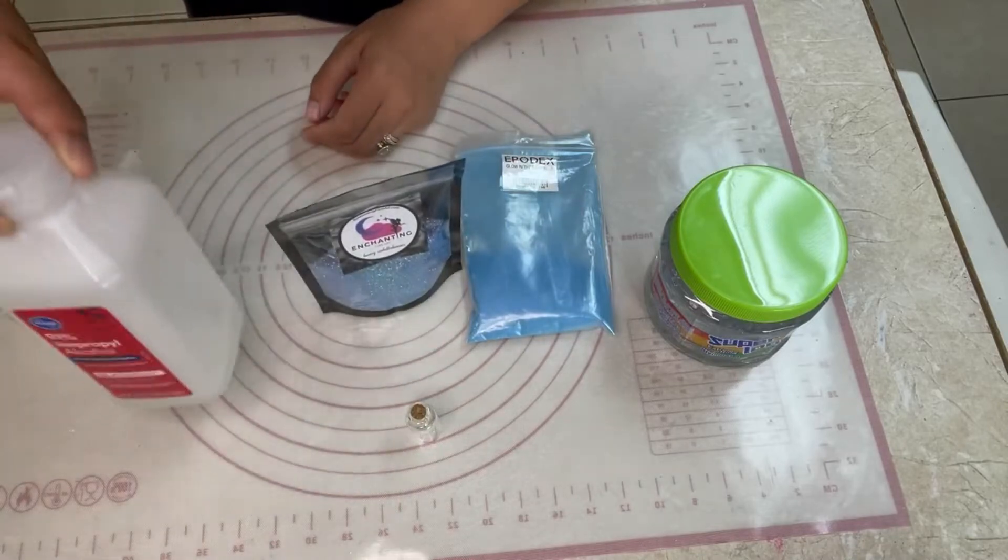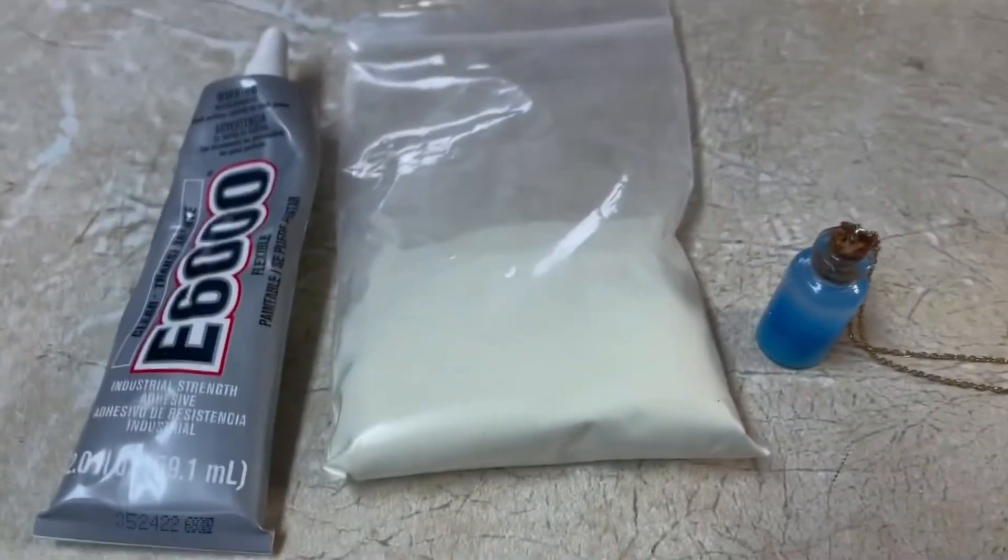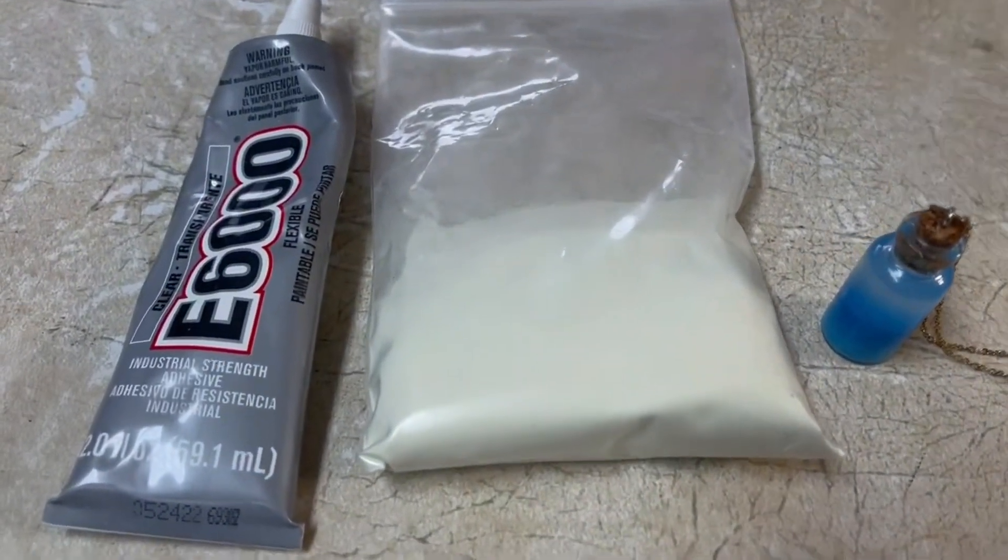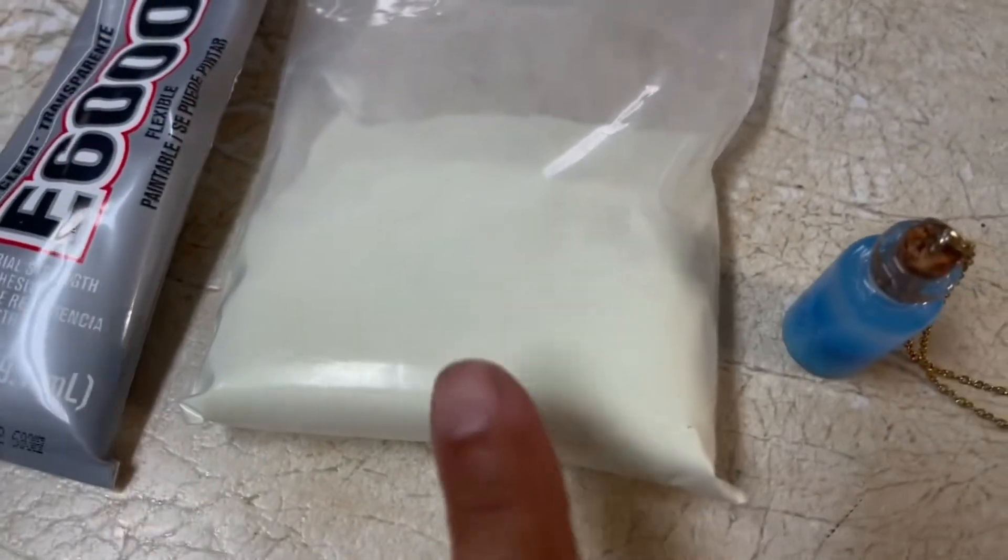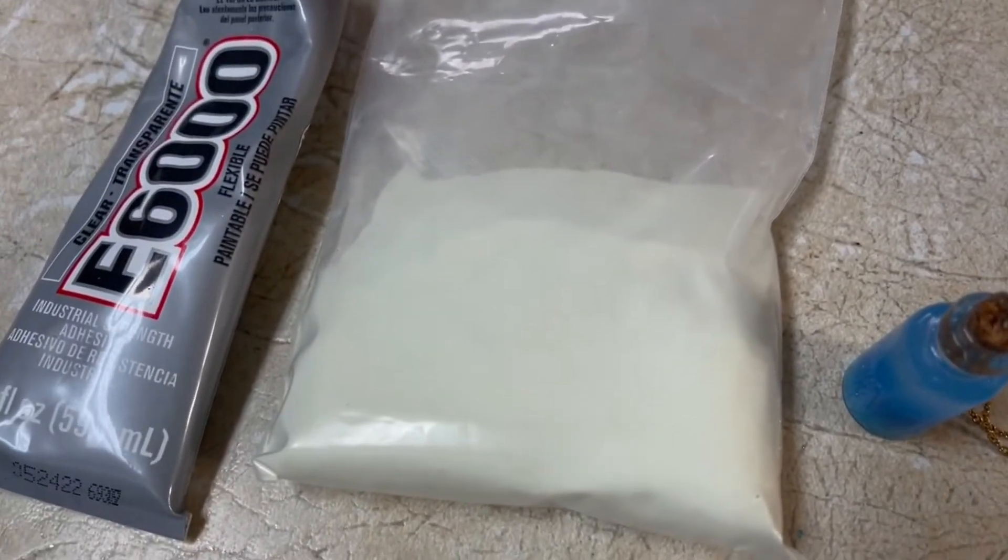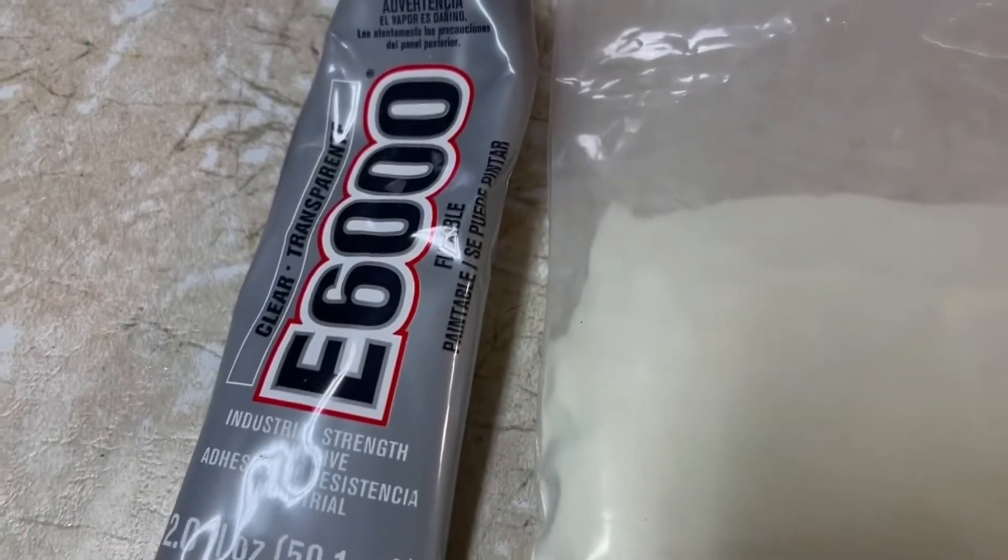And we're also using some isopropyl alcohol. We're also using a little bit of this E6000 glue and some of my blue glow-in-the-dark powder from Enchantingfineart.com.